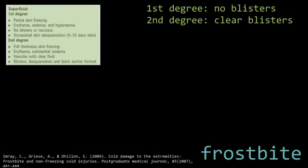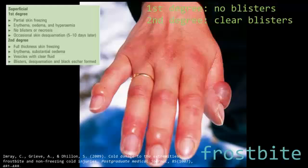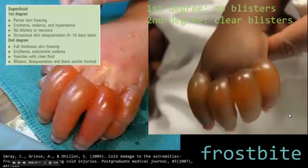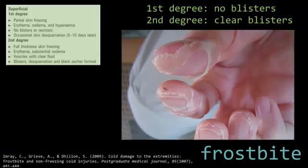Superficial frostbite can range quite a bit in its presentation. In first degree, you have no blisters — you can see some hyperemia in this example. In second degree, you have clear blisters, which can be quite extensive. Usually they're a little less severe if filled with clear fluid, and eventually this can cause some desquamation and eschar formation.